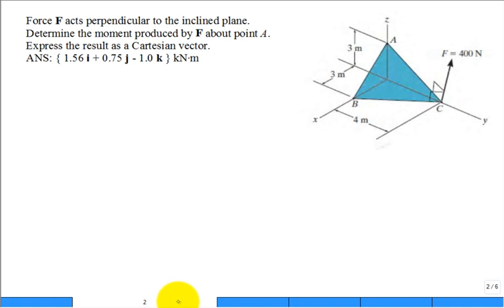Now we're in chapter 4 and we look at this problem. It says the force F acts perpendicular to the inclined plane. Determine the moment produced by F about point A. Express the result as a Cartesian vector.